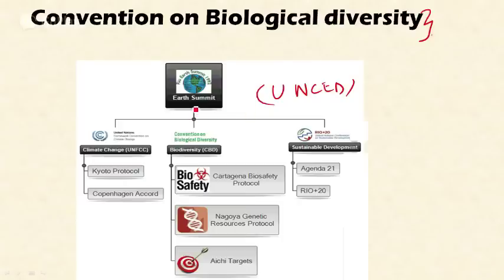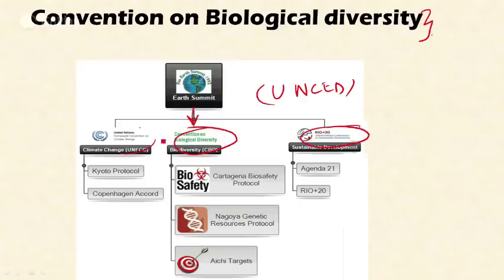The Rio Earth Summit opened for signing three important conventions called the Rio Conventions: the United Nations Framework Convention on Climate Change, the Convention on Biological Diversity, and the United Nations Convention to Combat Desertification. The Convention on Biological Diversity is one of these three.